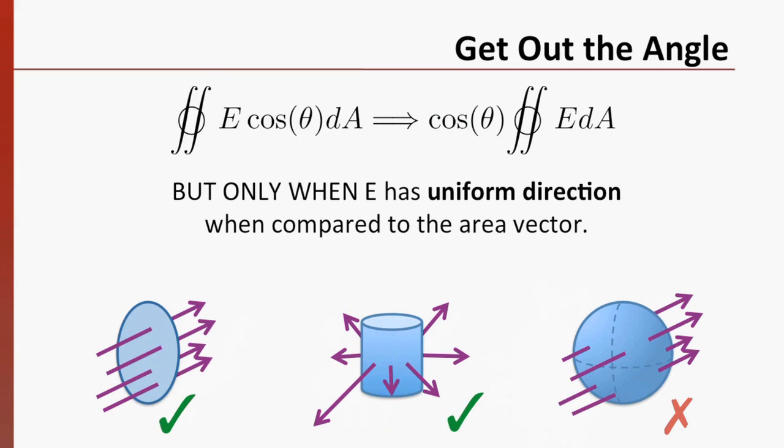We can remove the cosine theta from our integral only when the angle between the area and the electric field doesn't change. The left hand example shows a field that always points in the same direction, and an area that always points in the same direction. The middle example has a field whose direction changes, but it always points outward, just like the area vector from the cylinder points outward. It still works. In the right hand example, the field has a constant direction, but the area vector does not. The angle between them changes, so we couldn't remove the cosine from the integral.